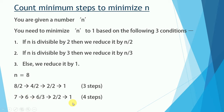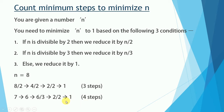Here is another possible scenario: we decrement 8 by 1 twice to get 6. Since 6 is divisible by 3, we divide by 3 to get 2. Since 2 is divisible by 2, we divide by 2 to get 1. That takes 4 steps to minimize 8 to 1 — which we don't want. We need the minimum steps, so we'll solve this using dynamic programming.